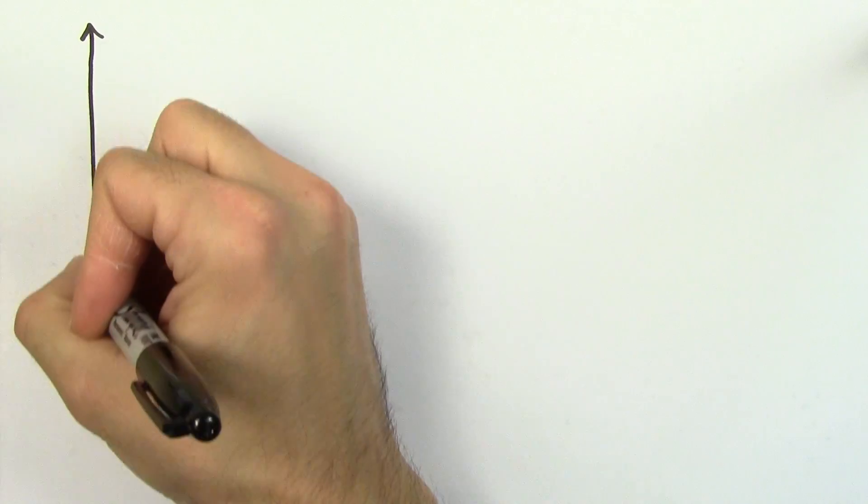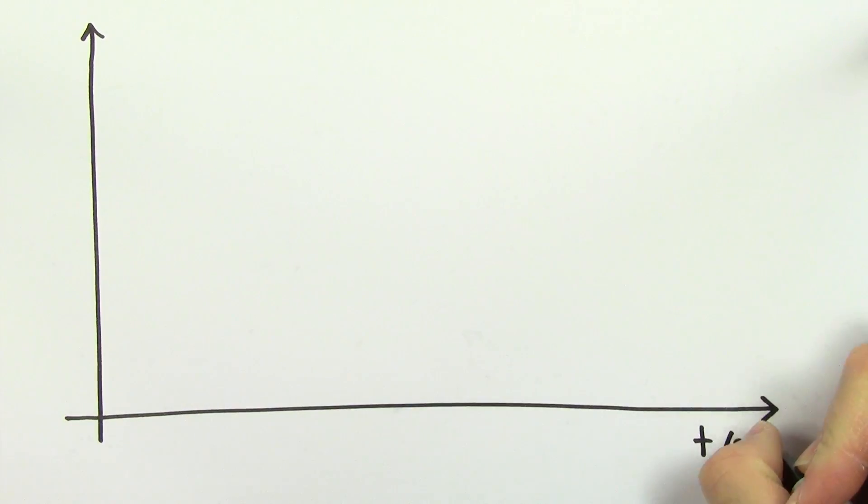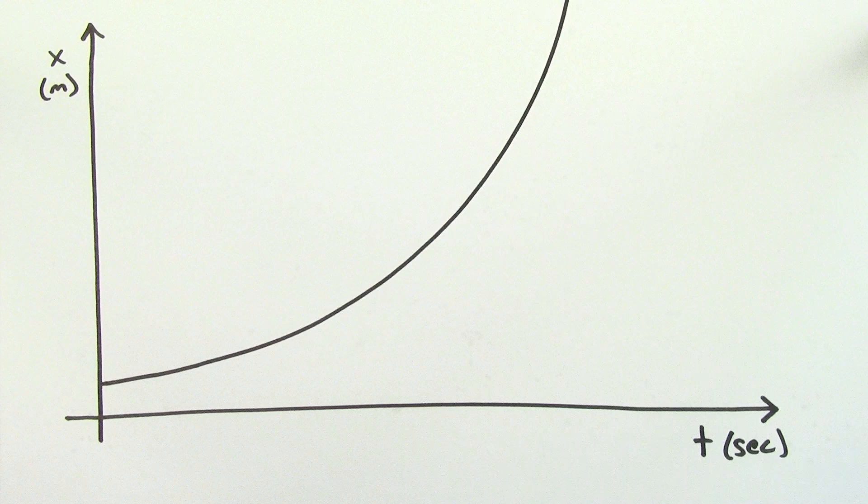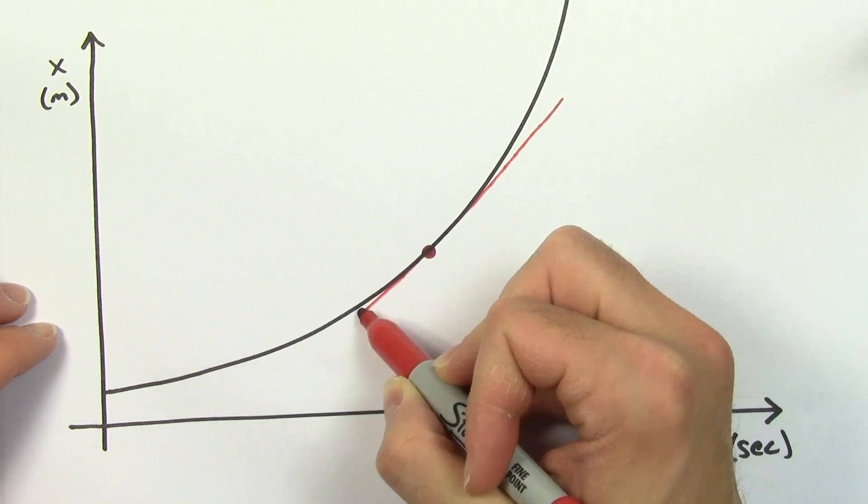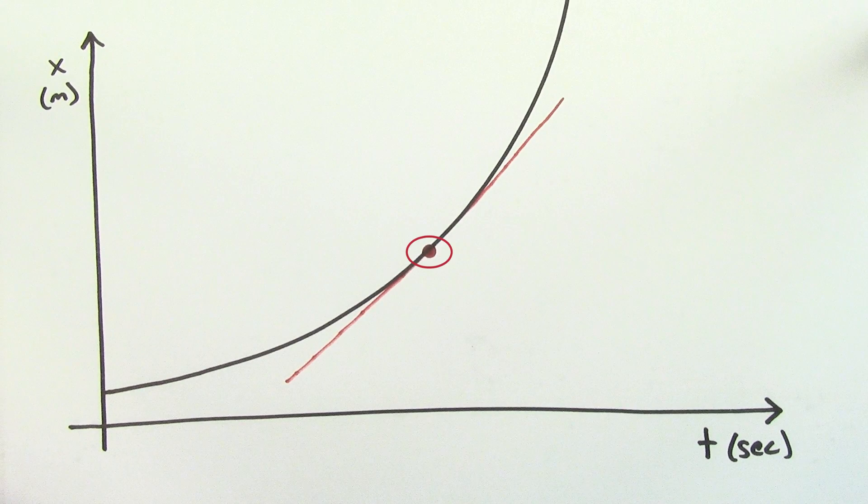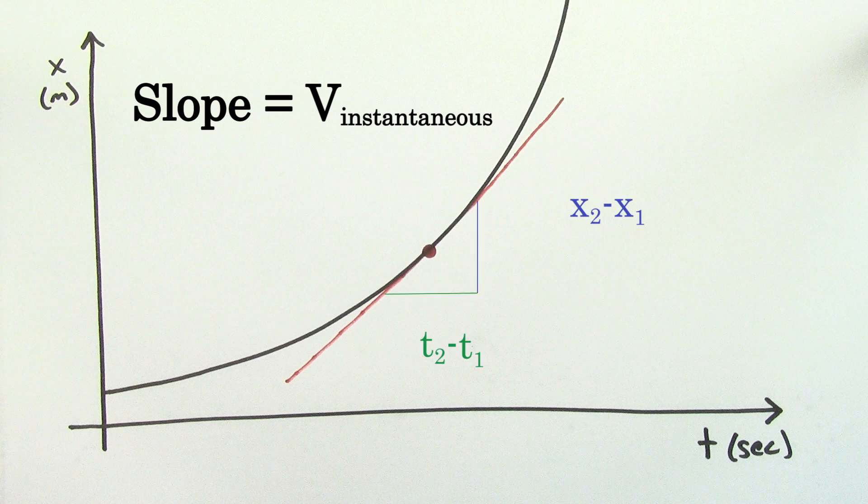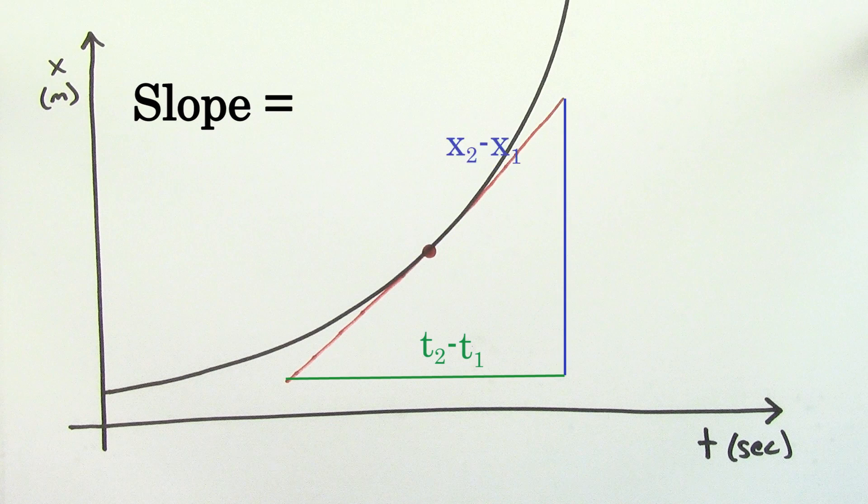If your velocity is changing, one way you can find the instantaneous velocity is by looking at the motion on an x versus t graph. The slope at any particular point on this position versus time graph is going to equal the instantaneous velocity at that point in time, because the slope is going to give the instantaneous rate at which x is changing with respect to time.